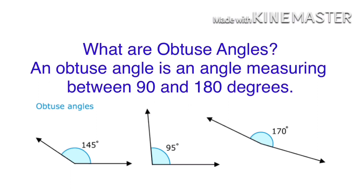Now let us learn what are obtuse angles. An obtuse angle is an angle measuring between 90 and 180 degrees. All angles that come between 90 and 180 degrees are called obtuse angles.